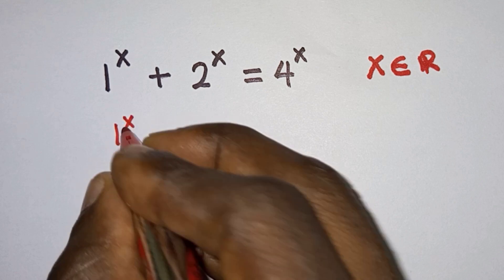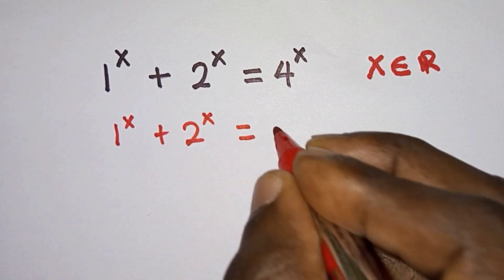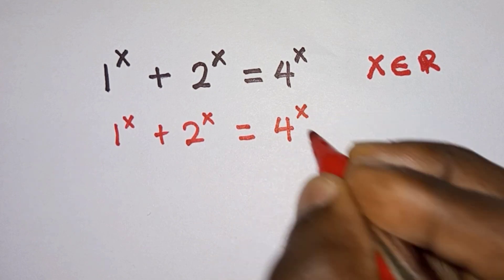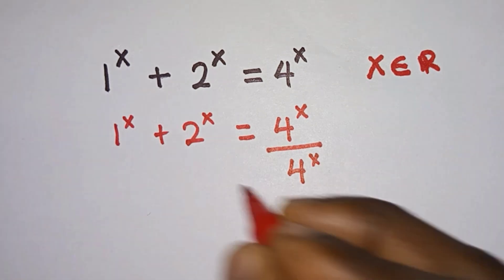We have 1^x + 2^x = 4^x. Now let's divide through by 4^x.